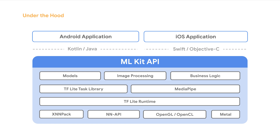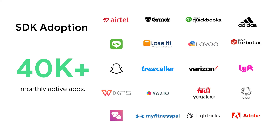The ML Kit SDK manages all the complexity of multiple models, image processing, TensorFlow Lite runtime, hardware acceleration, and much more, delivering a complete and easy-to-use solution. ML Kit APIs are in Kotlin and Java for Android, Swift and Objective-C for iOS, with documentation and sample code for them all. I'm excited to announce that ML Kit has more than 40,000 monthly active apps, including many top brands.